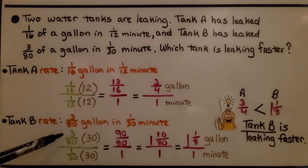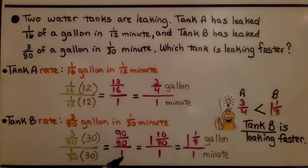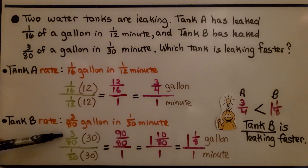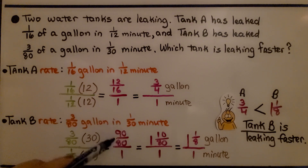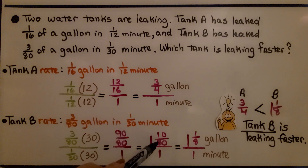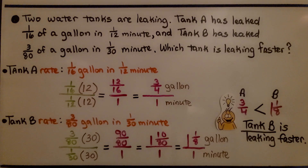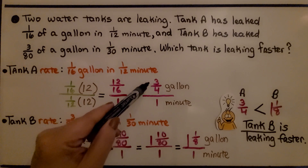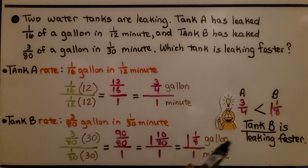For tank B's rate, we write 3/80 over 1/30. To turn 1/30 into one whole, we multiply by 30. We multiply the numerator by the same thing to get 90/80. This simplifies to 1 and 10/80, and again as 1 and 1/8 gallons per minute. So which tank is leaking faster? Tank B has more gallons coming out per minute — 1 and 1/8 is greater than 3/4, so tank B is leaking faster.